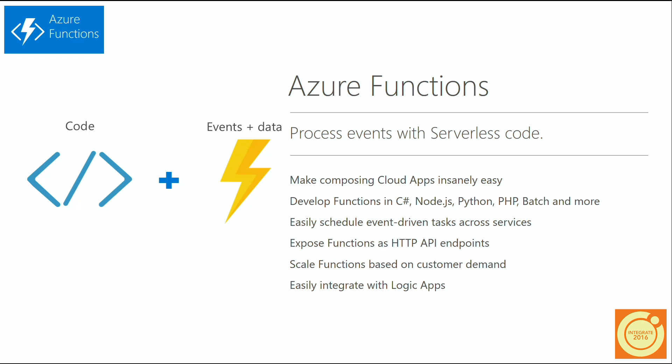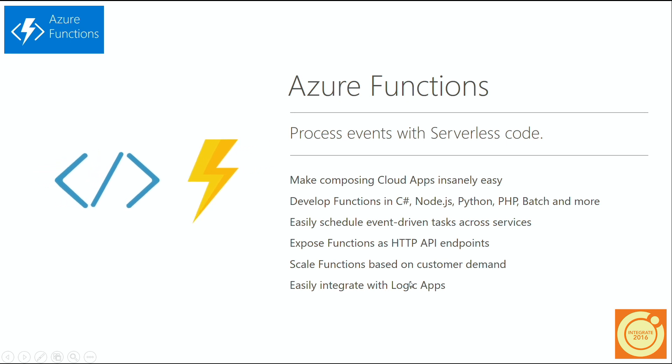With the Web Jobs SDK you could just use attributes to say you want to listen on a Service Bus queue or topic and run a bit of C# code to process that. It also had input and output binding — when you got a queue message, you could look up a record in a table and then store those records to a blob, abstracting those pieces. With Functions, we took it a step further and moved a lot of the code-heavy setup into more config-based things, mixing config with code for a lighter experience.